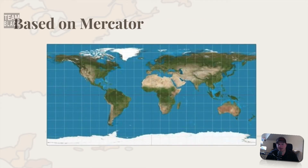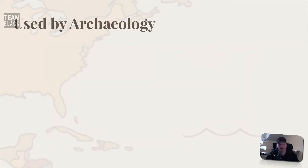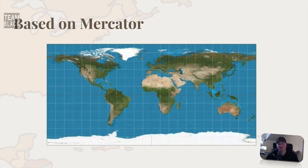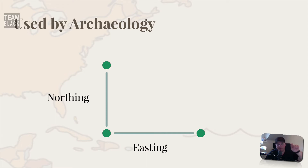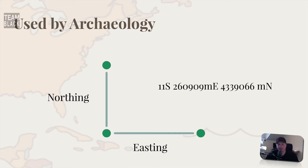So it's based on the Mercator projection, which basically lays the planet out flat on a sheet of paper, and then they laid this grid over the top of it. That's what UTM is called: Universal Transverse Mercator. Uses in archaeology: you've got your northing and your easting. A typical coordinate is going to have several components — you need your grid location, so 11S in this case, and then 260909 meters east by 4339066 meters north. That gives you a location on a UTM grid.